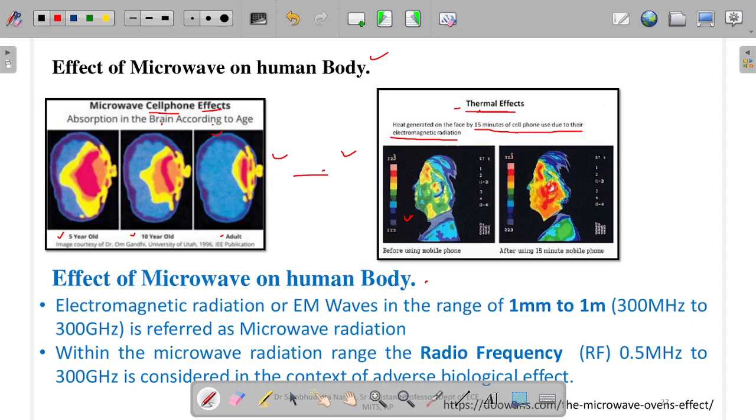Effect of microwave on human body - electromagnetic radiation or EM waves in the range of 1 millimeter to 1 meter, or 300 megahertz to 300 gigahertz. If any frequency is between 300 megahertz to 300 gigahertz, it's referred to as microwave radiation.